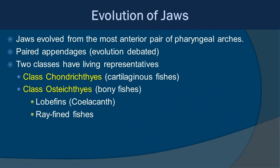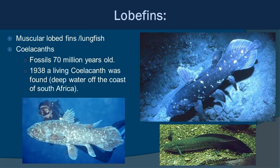Now let's take a look at the evolution of jaws. Jaws evolved from the most anterior pair of pharyngeal gill arches. There are two living classes within this group that have jaws. First is Class Chondrichthyes, which we'll talk about in 10.2 — these are cartilaginous fish such as sharks and rays. Then we have Class Osteichthyes, which are your bony fish, and that's what we're primarily talking about today. This includes lobe-fin fishes, the coelacanth, ray-fin fishes — which are most of the fish you know about — and we also include lungfish in the lobe-fin category.